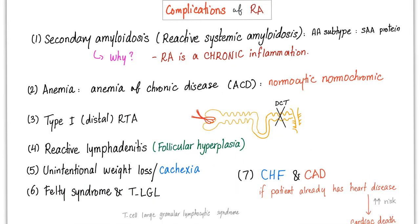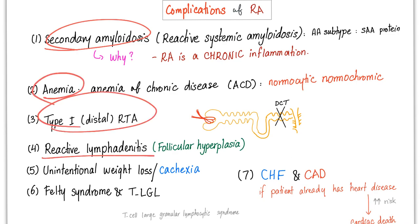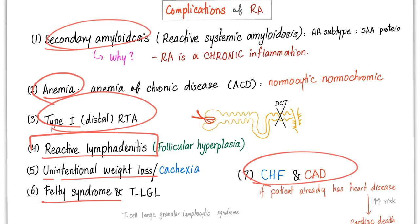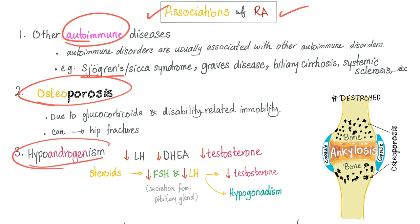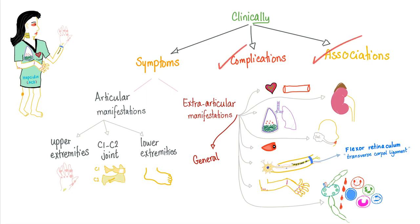Rheumatoid has symptoms, complications, and associations. Complications include secondary amyloidosis — as expected from a chronic inflammation — anemia, type 1 RTA, reactive lymphadenitis, unintentional weight loss, Felty syndrome, and sometimes CHF and coronary artery disease. Associations include other autoimmune diseases such as Sjögren's syndrome, osteoporosis, and hypoandrogenism. We are done with complications and associations.